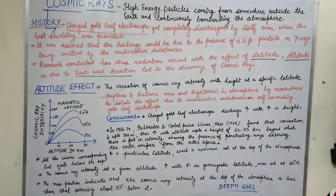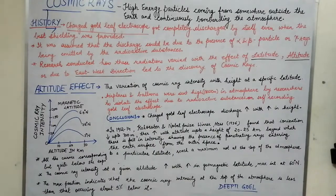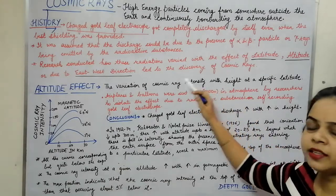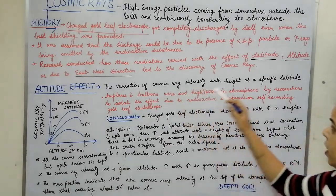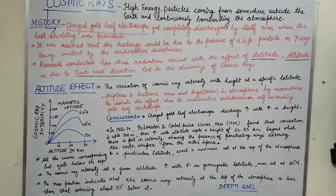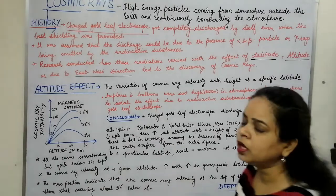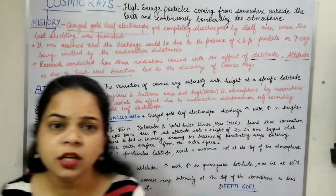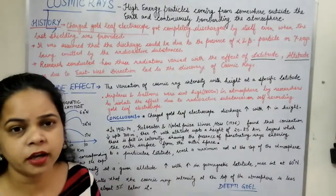What do we mean by the altitude effect? The altitude effect refers to how cosmic ray intensity varied with height — specifically, how the cosmic ray intensity varied with height at a specific latitude.